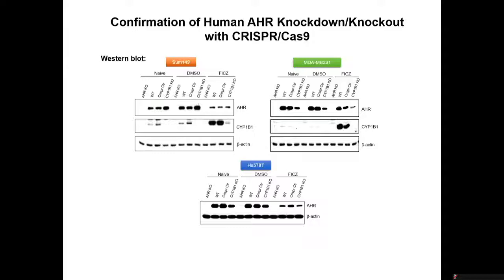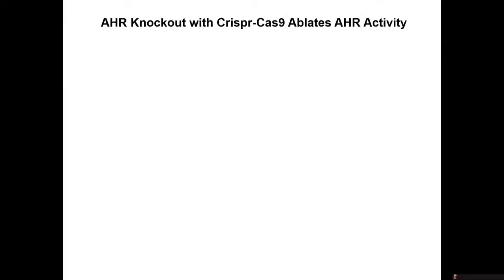You can look at a more profound outcome if you treat these cells with an AHR ligand. What you get is the expected upregulation of CYP1B1 in the controls — the wild type and the CRISPR control — so everything's working well there. But there's no AHR, and there's very little CYP1B1 left. So we're looking at a very high level of deletion of the AHR. Basically the same patterns happen with the MDA line and the HS57AT. It is relatively easy to do, very consistent and very profound.